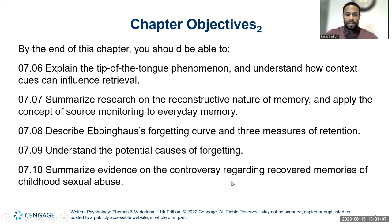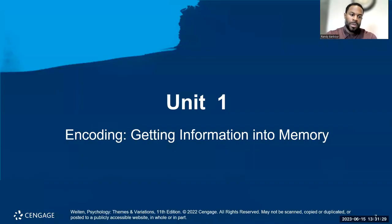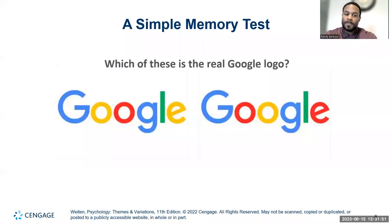Here are our objectives. We'll talk about the three processes of memory: encoding, storage, and retrieval, and then the intricacies of each part. Encoding is getting information into memory — that's the first part. We'll also discuss issues with memory and how memories can be altered, and how we can get misinformation that changes our memories based on information received after an event.